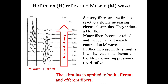At very low intensity, no response can be recorded. When we increase the intensity, the H-reflex appears first. When the intensity is increased again, the H-reflex becomes larger, and at the same time the M-wave appears. When the intensity becomes very high, the H-reflex becomes smaller and smaller, while the M-wave becomes bigger and bigger. When the stimulus intensity reaches a very high level, the H-reflex disappears while the M-wave reaches its maximum.